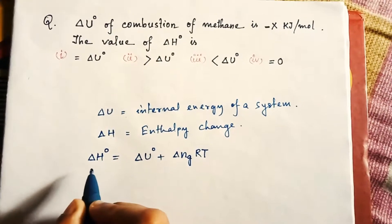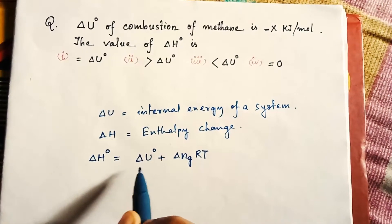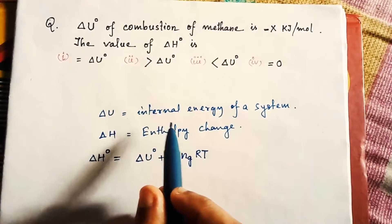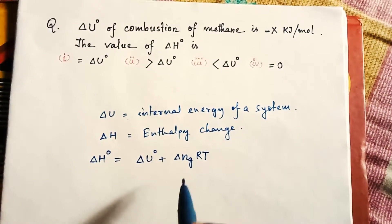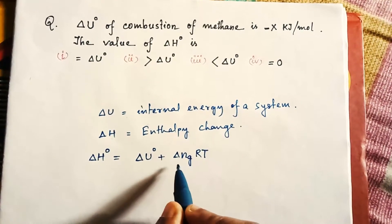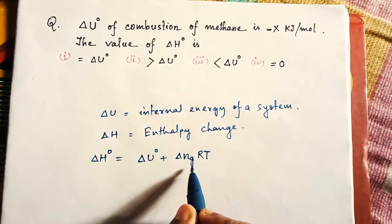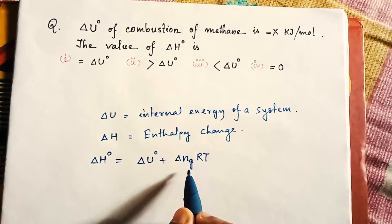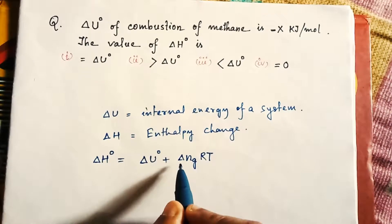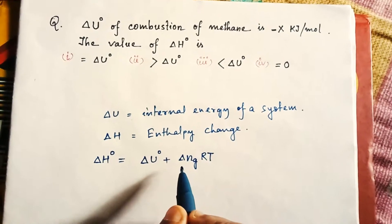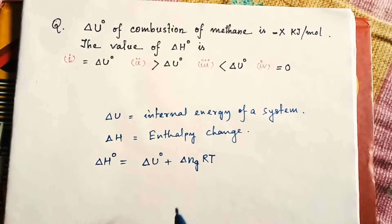Now ΔH° means enthalpy change, ΔU° means internal energy of the system. Now another new term is Δng. The small letter g means gaseous molecules, and the Δn means number of moles of gaseous molecules.